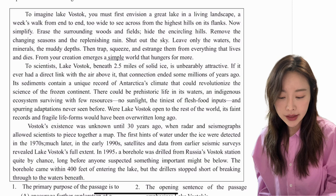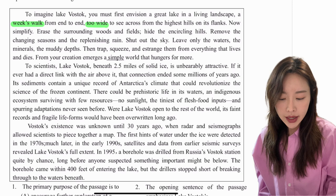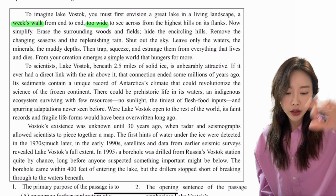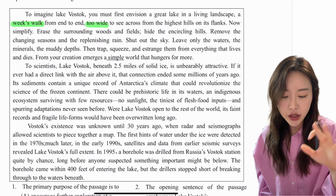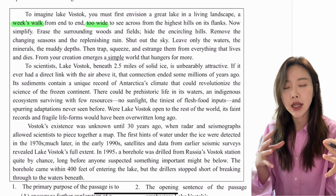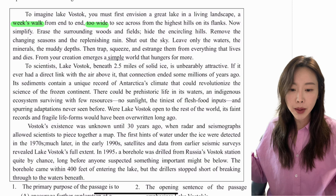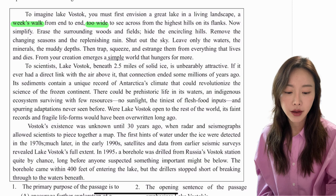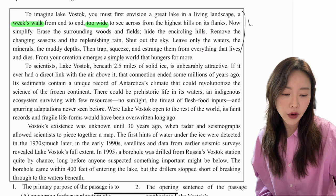Let's look at the passage. 'Imagine Lake Vostok — you must first envision a great lake in a living landscape, a week's walk from end to end, too wide to see. Now simplify: erase the surrounding woods and fields, hide the encircling hills, remove the changing seasons, replenishing rain, shut out the sky — leave only the waters, the minerals, the muddy depths. Then trap, squeeze, and estrange them from everything that lives and dies. From your creation emerges a simple world that hungers for more.' So for this paragraph, we can annotate: Lake Vostok — simplified.